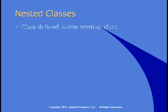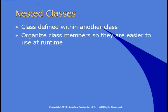Another way to organize classes is to nest them. A nested class is a class defined within another class. You do this to organize your class members so they're easier to use at runtime. Take the example of a customer class — it has properties and methods relating to various aspects of customers. Some relate to information about the customer: name, location, etc. Some relate to financial information such as credit limit, and there's also a method to change the credit limit. Finally, some members relate to sales. Rather than present users with a long list of all members, you can nest classes and group them.